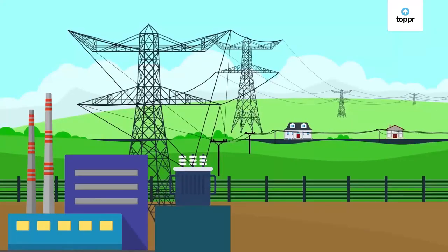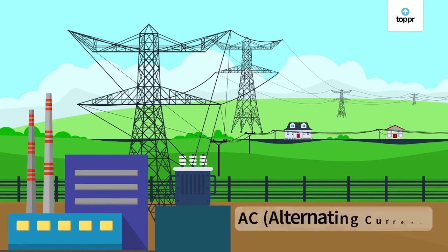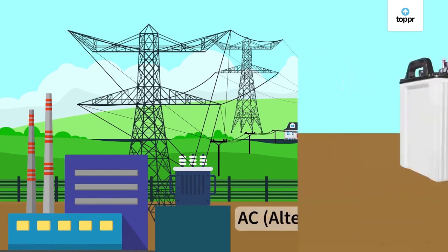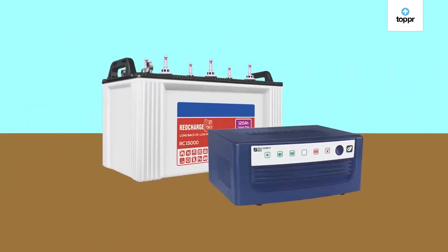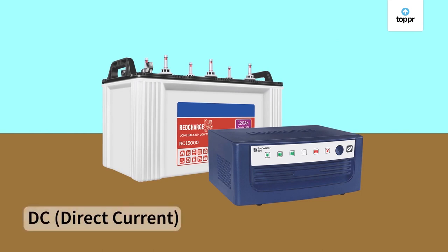Electric supply from powerhouses and electric generators is supplied in the form of alternating current or AC, while the current supplied by batteries is direct current or DC.